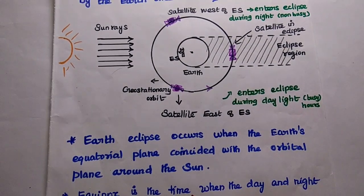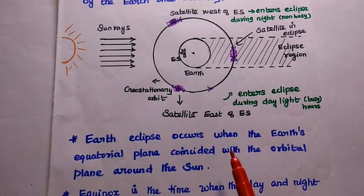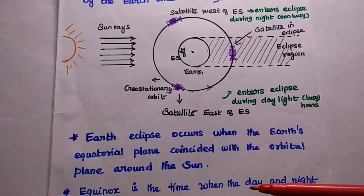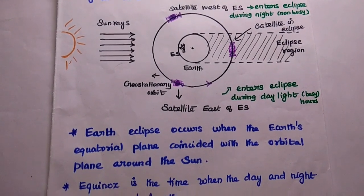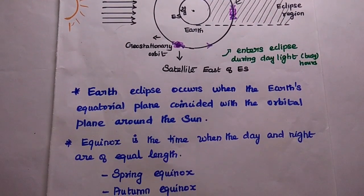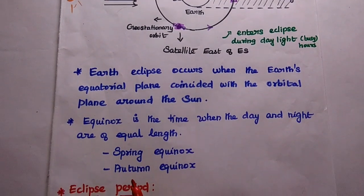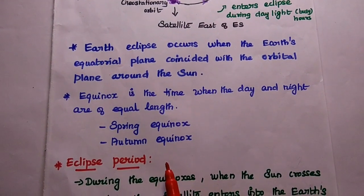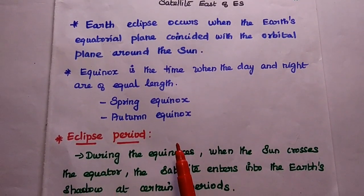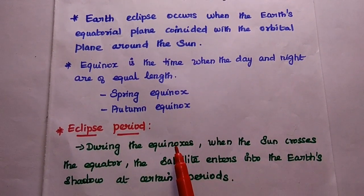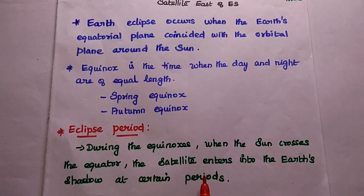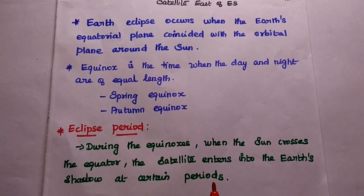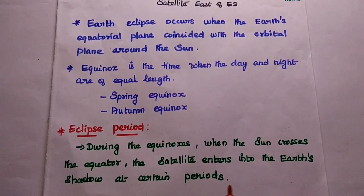Earth eclipse occurs when the earth's equatorial plane coincides with the geostationary orbital plane around the sun. Equinox is the time when day and night are both of equal length. There are two equinoxes: spring equinox and autumn equinox. During the equinoxes, when the sun crosses the equator, the satellite enters into the shadow of earth — that is known as the eclipse period.